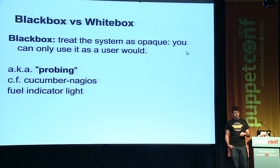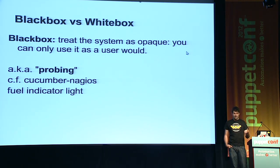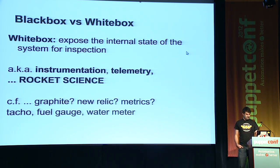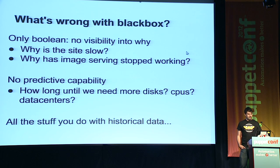So as I just said, black box probing is kind of like the fuel indicator light. It tells you what the system would look like to a user. The white box, on the other hand, is obviously the metrics. In real-world situations, things like the dashboard of your car is a lot of white box instrumentation, and the electricity and water meters in your home.